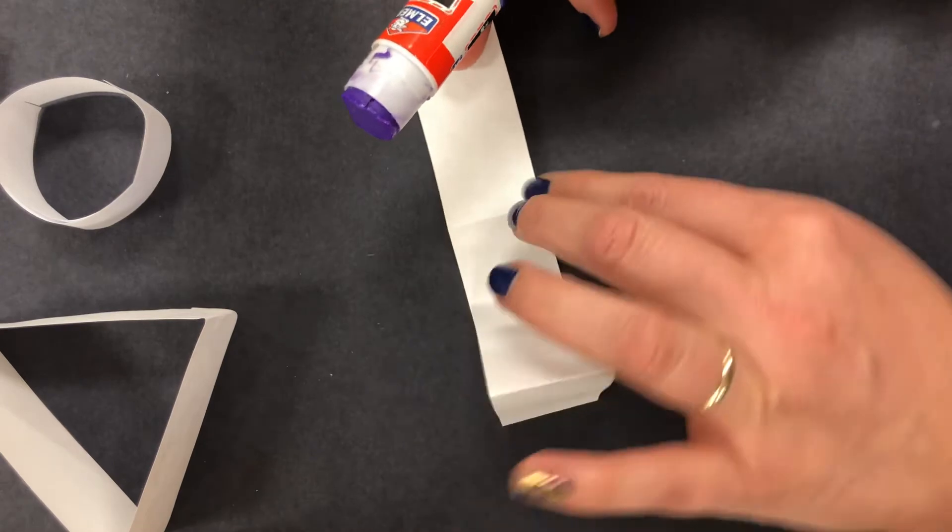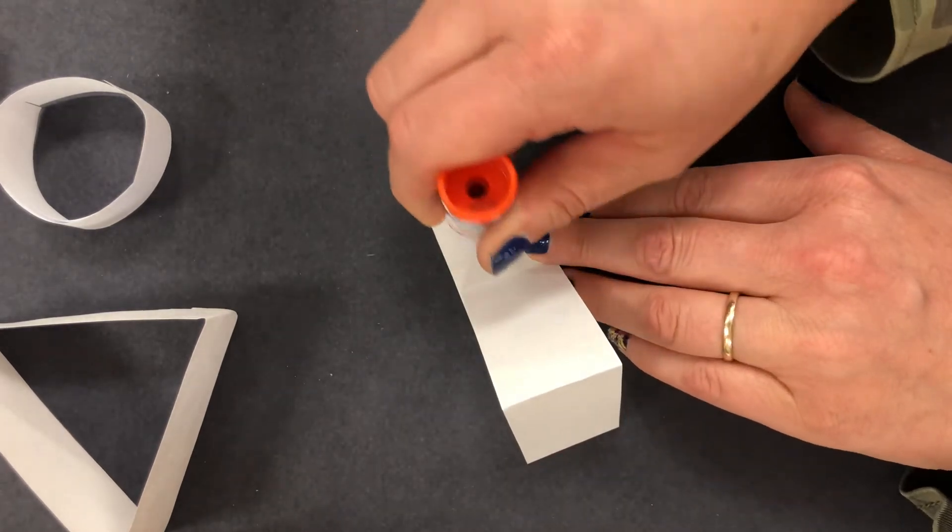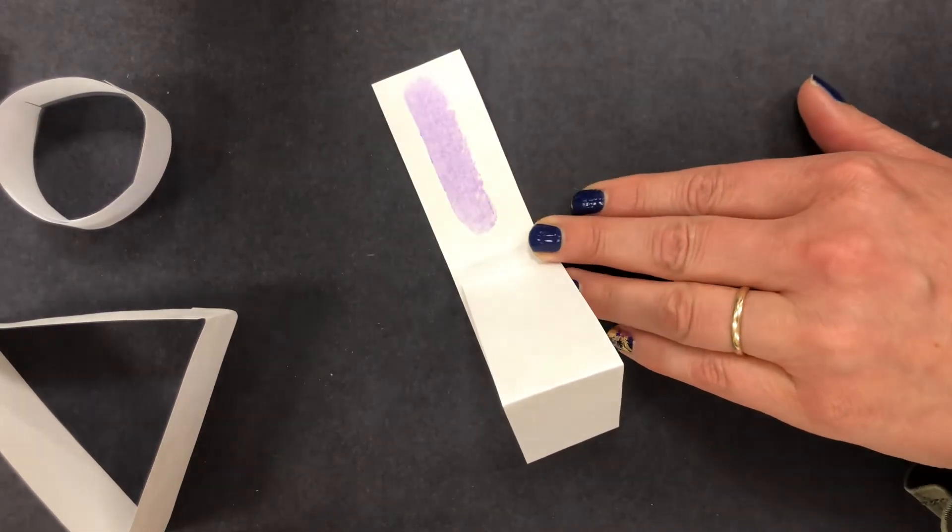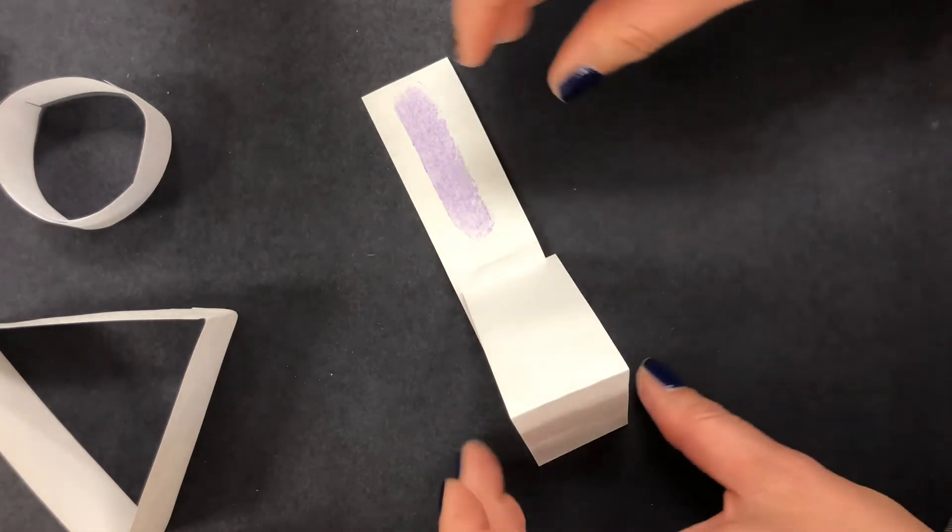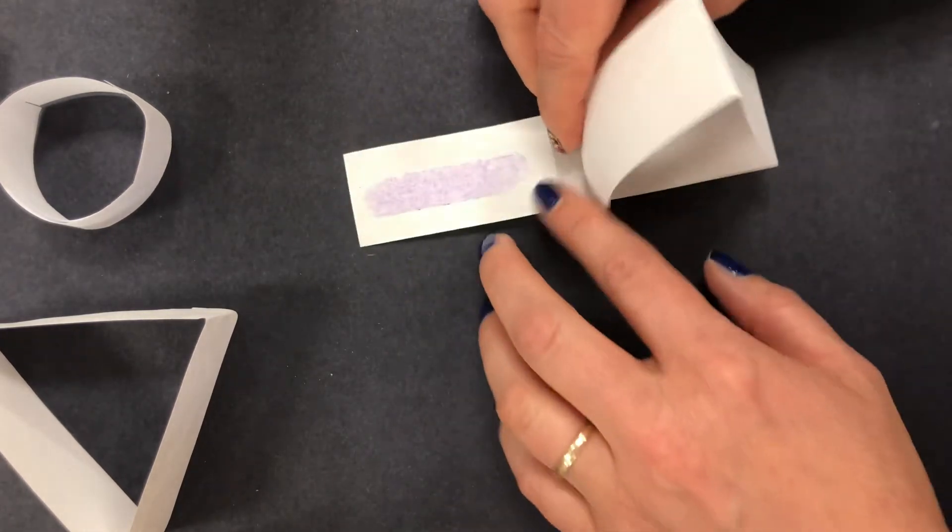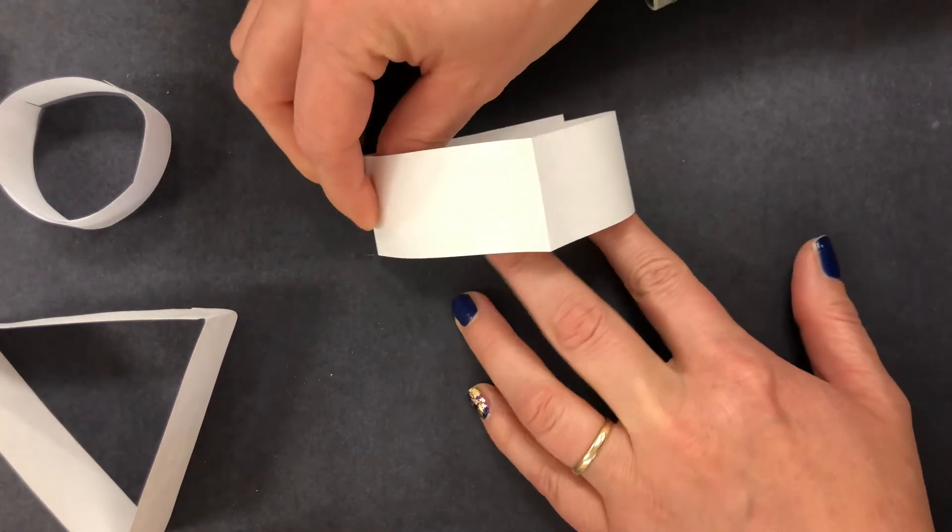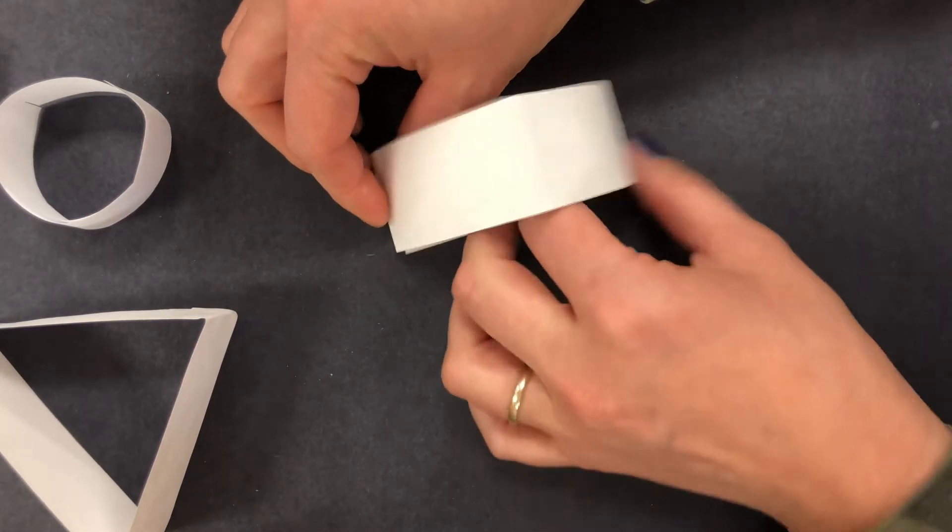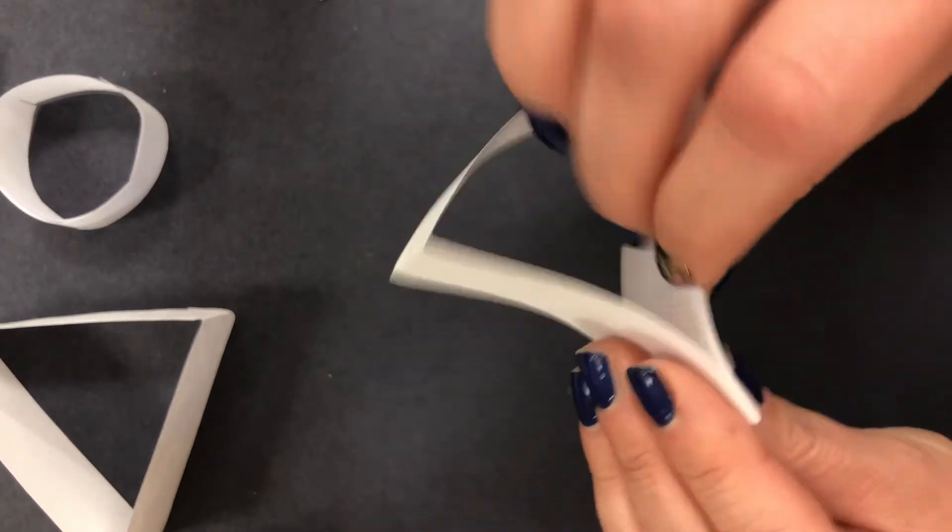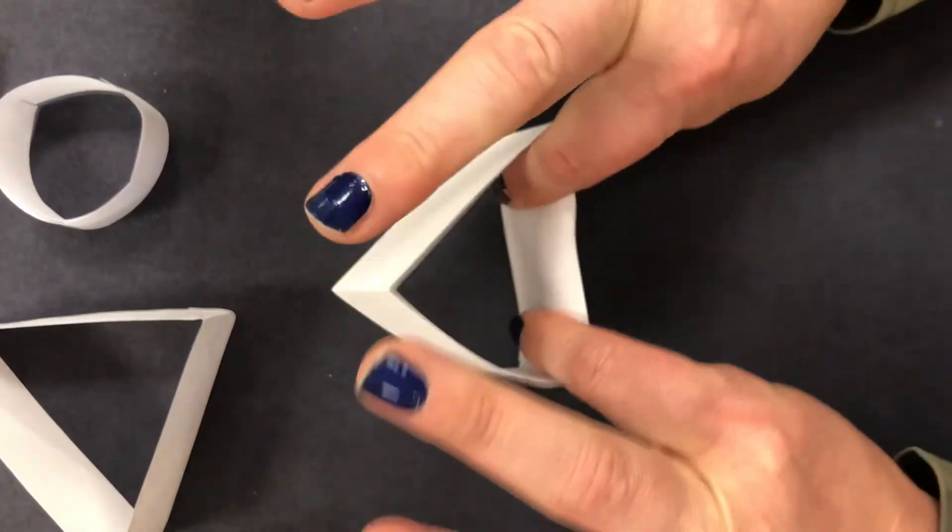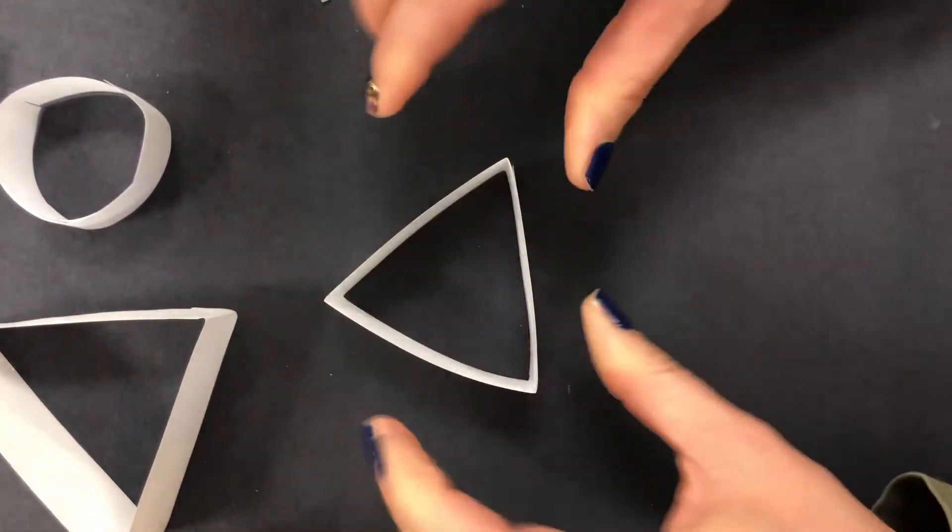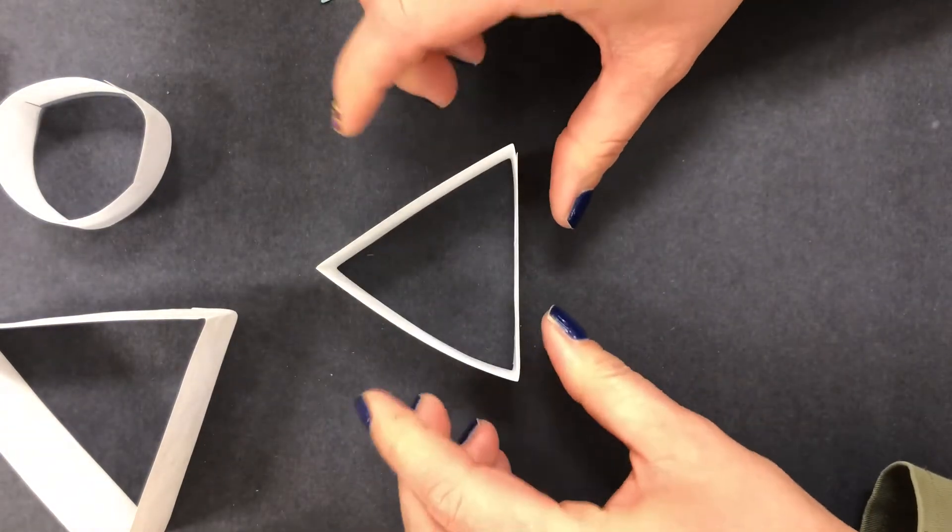And of course this is kind of an interesting shape right here so you could glue that down there. But I'm going to put some glue along this fourth side and then I'm going to roll this over onto that fourth side and pinch it. And now I've got a triangle.